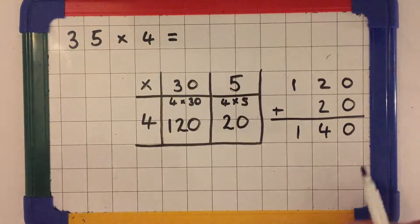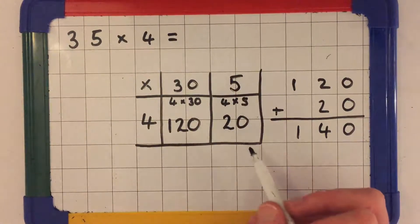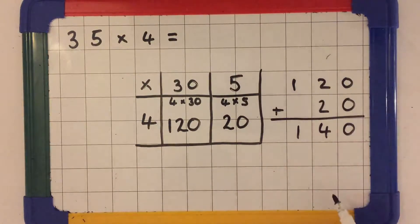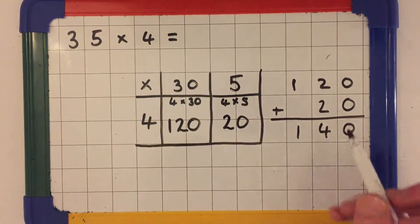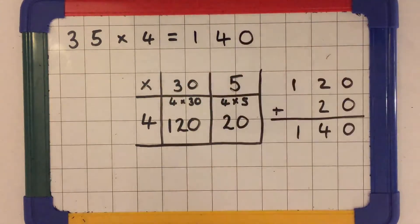In this instance you could add 120 and 20 mentally so you wouldn't need to do the column addition. Our answer then is 140.